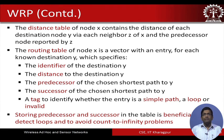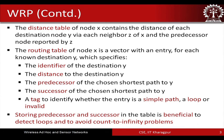The distance table of any node basically contains the distance of each destination node via each neighbor of that node, and the predecessor reported by the neighbor node. So the distance table of a node X contains the distance of each destination node Y via each neighbor Z of X, and the predecessor node reported by Z.